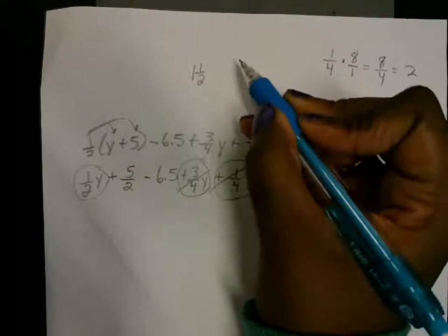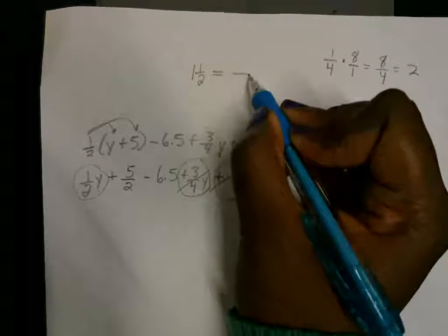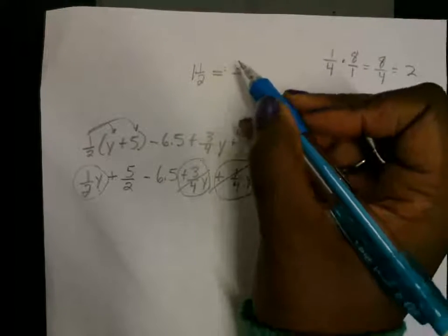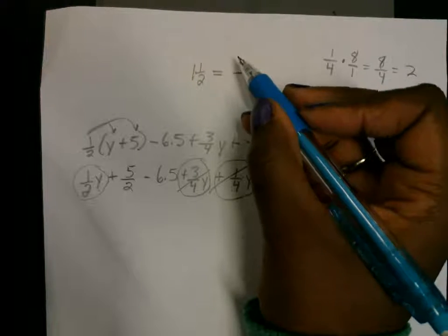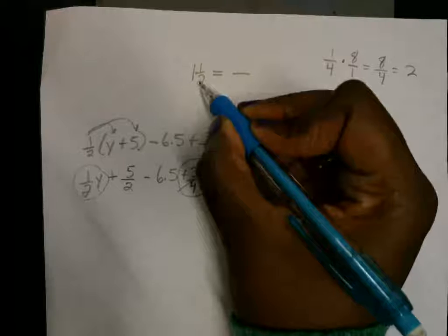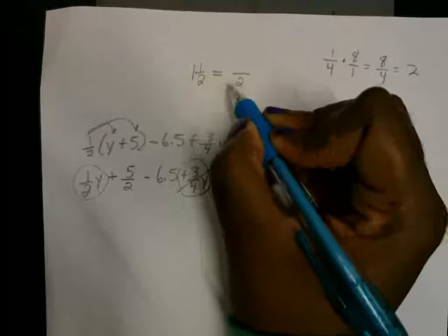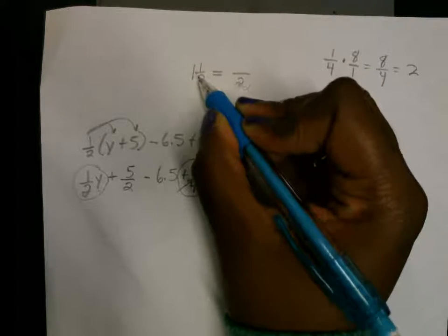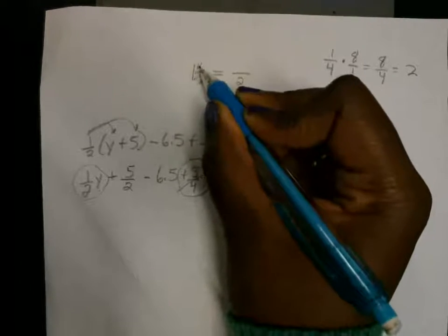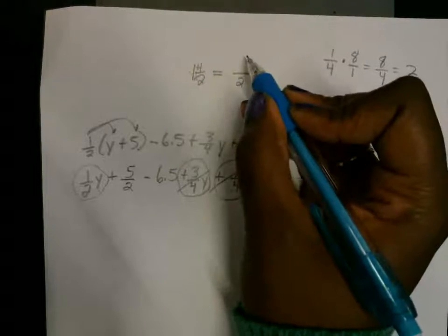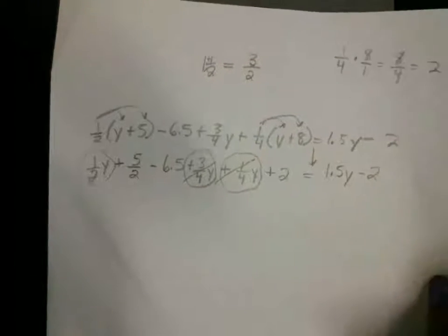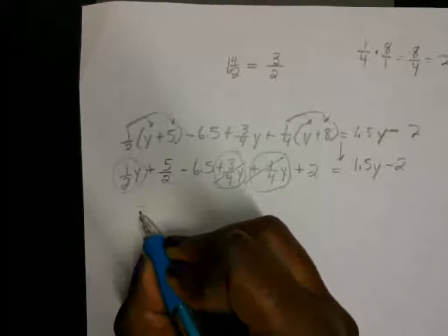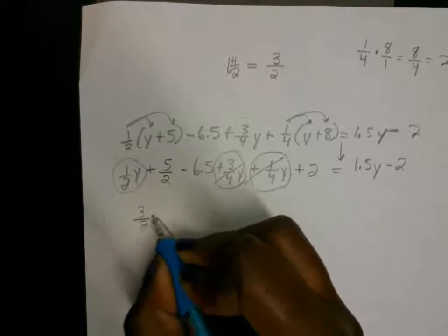So we got 1y here. We combine these, and then we combine this. We have 1 and one-half. So 1 and one-half, we're going to write as an improper fraction so that it's easier to get rid of when we're solving for y. So the denominator stays the same. We multiply the denominator times the whole number, which is 2, and we add the numerator, which is going to be 3. So that's three-halves. So we got three-halves y.